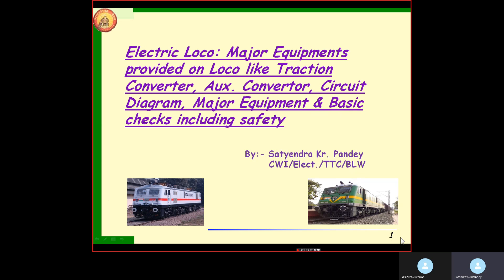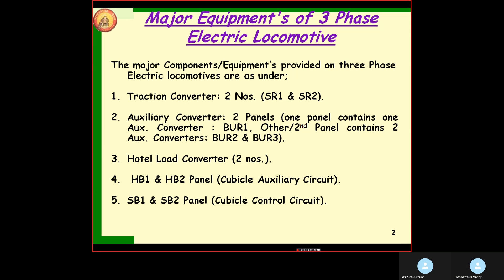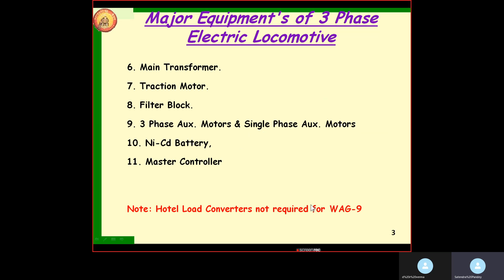In the major equipment list: traction converters are two numbers, known as SR1 and SR2, also known as auxiliary converter. There are two panels in which the auxiliary converter BR1 is in one panel, and BR2 and BR3 are in the other panel. The hotel load converter is also two numbers. Then we have HV1 and HV2 panel cubicles for the auxiliary circuit. We also have main transformer, traction motor, filter block, three-phase and single-phase auxiliary motors, NIC, nickel-cadmium battery, and master controller.